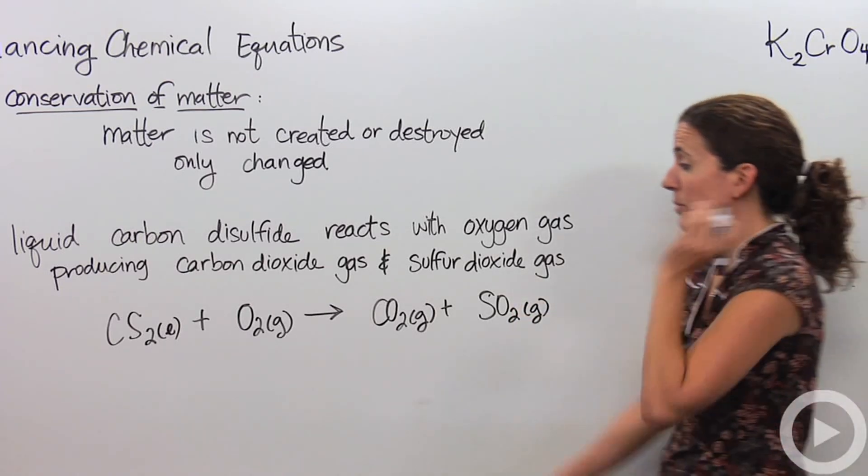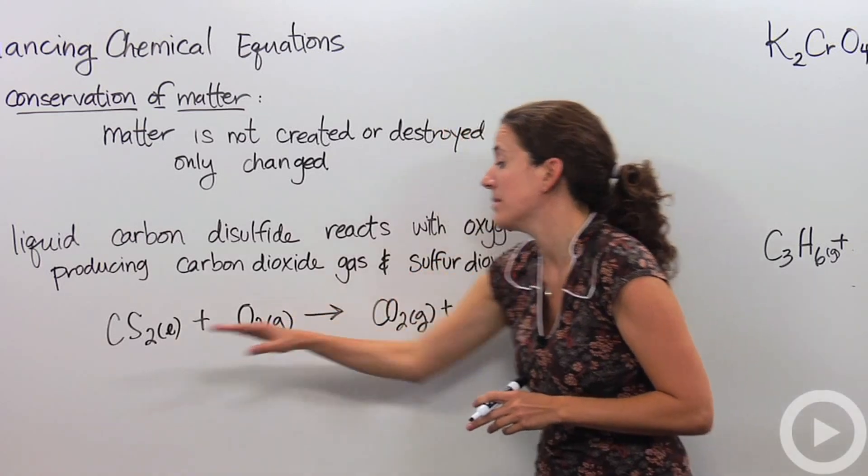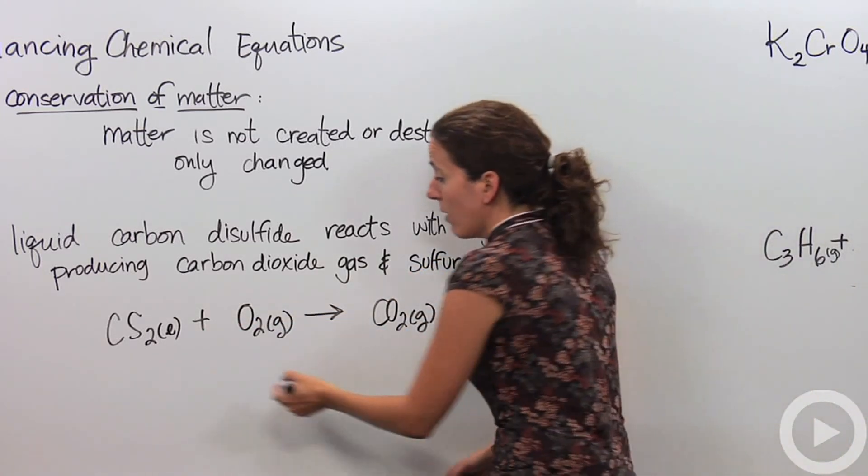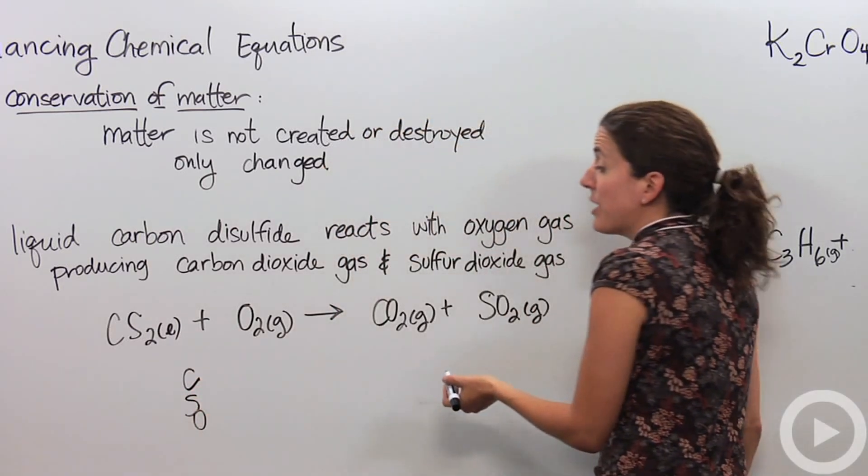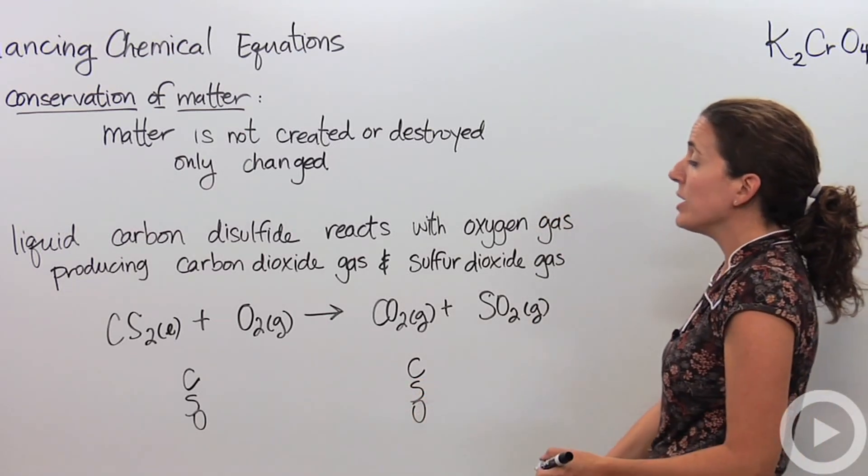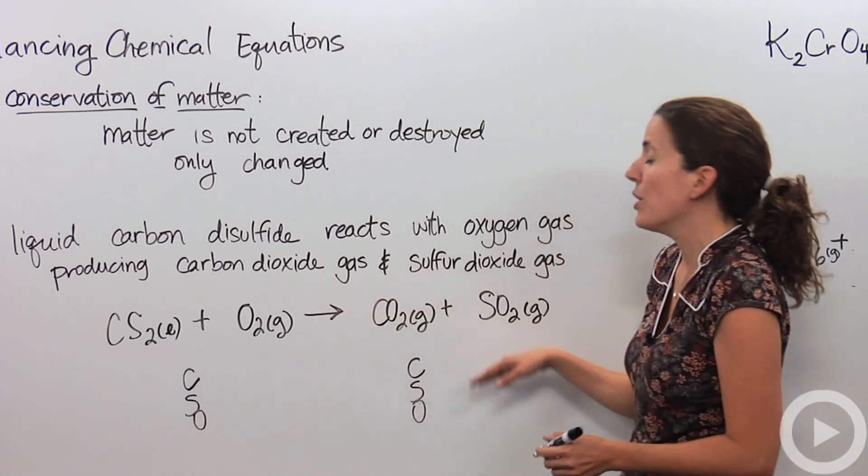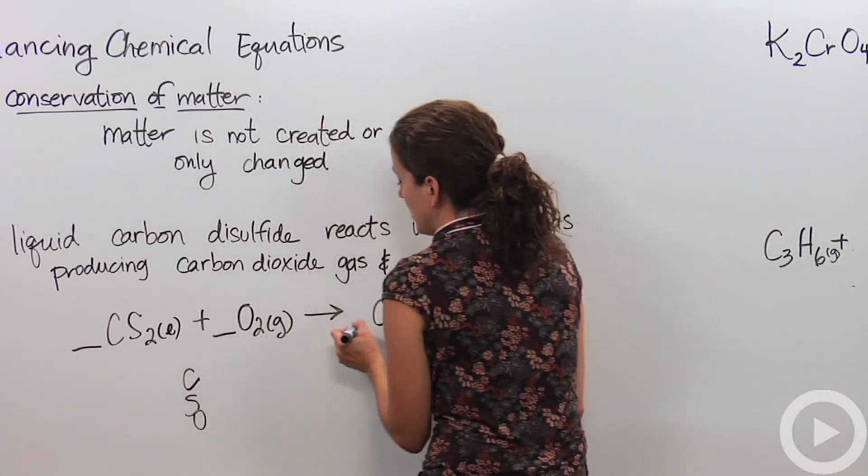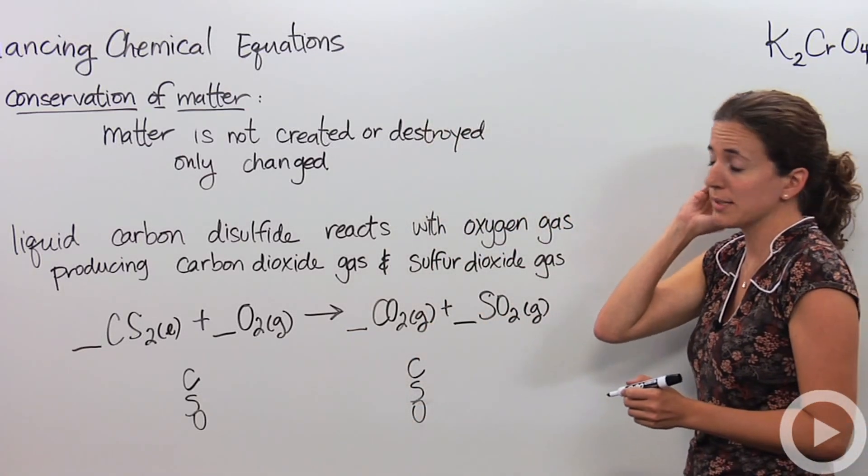But we want to make sure when we're dealing with chemical equations that the number of particles or the number of elements that you have on the reactant side equals the number of elements you have on the product side. So let's go ahead and check that. We have carbon, sulfur, and oxygen here, which means we should have strictly carbon, sulfur, and oxygen on the product side. And we want to make sure when we're dealing with these that we do not change the actual molecules themselves. We only change the number of molecules that we have. So the only place I actually want to put numbers and make changes is the place before that. We call those coefficients.